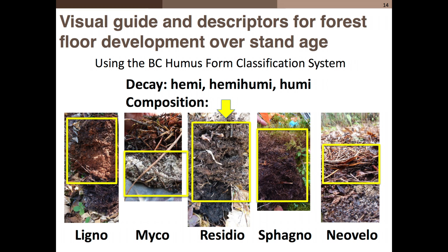We're going to base the visual guide on the BC humus form classification system, which I think is the best one available. While we're often taught about mull, mor, and moder, mostly what we deal with here are the moor humus form types. The BC system describes three stages of decay — hemi, hemi-humi, and humi-morph — and also provides language to describe composition. Examples include ligno for dominantly wood, myco for dominantly mycorrhizae, residual for a mixed composition, sphagnol for mosses, and neovello for thin pure dead litter.